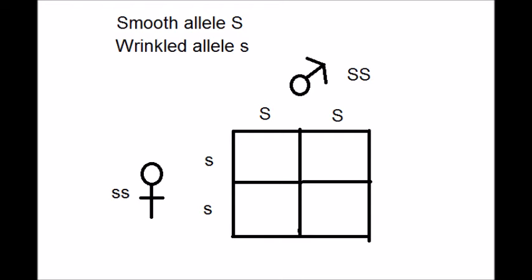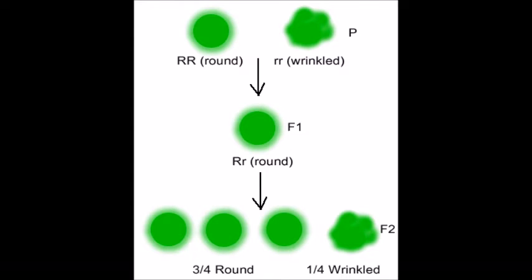In the boxes of our Punnett square we write the genotypes of the offspring produced when the two gametes fuse together creating a diploid zygote. In the top left box the offspring will inherit a big S allele from the male and a little s allele from the female, and in the other three boxes we get the same result. All the offspring of this cross were heterozygous with one smooth and one wrinkled allele, so since the smooth allele is dominant all offspring had a smooth phenotype. What caused the 3 to 1 phenotypic ratio in the next experiment?